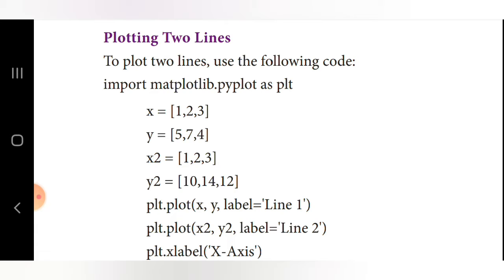In this example we are taking four sets of points: x, y and x2, y2. x and y are used to draw line 1, and x2, y2 are used to draw line 2. So y equals 5, 7, 2 for the x-axis and y-axis values. Then x2 equals 1, 2, 3 and y2 equals 10, 14, 12.